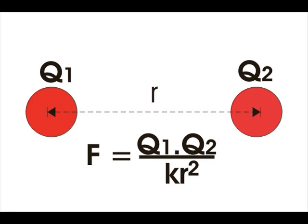Finally, we can say that force F equals Q1 into Q2 divided by K into R square. This is nothing but the expression of Coulomb's law.